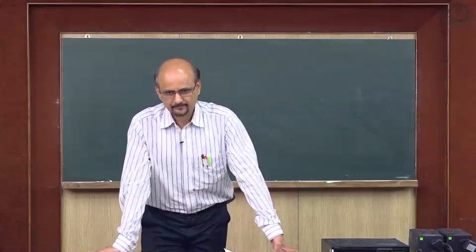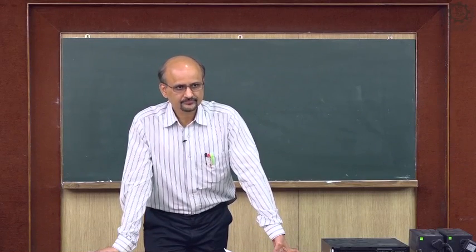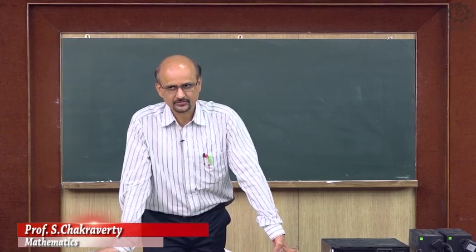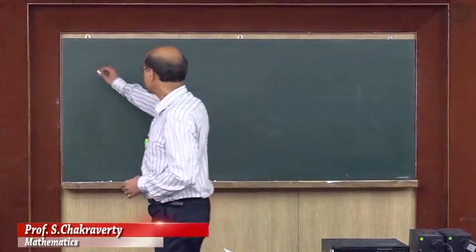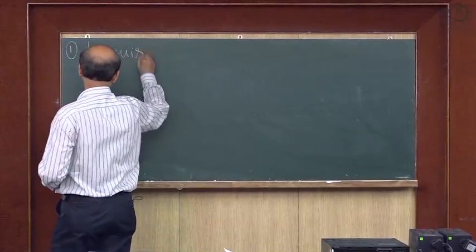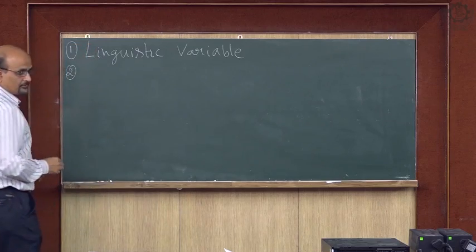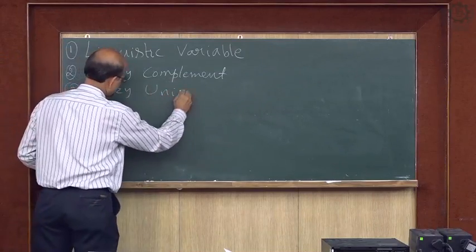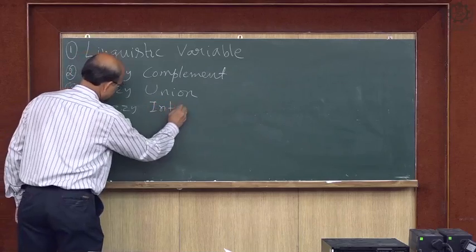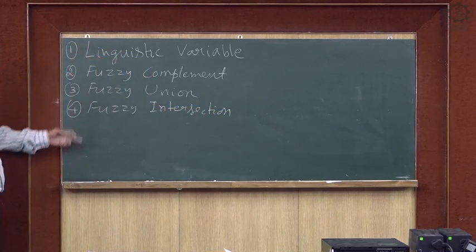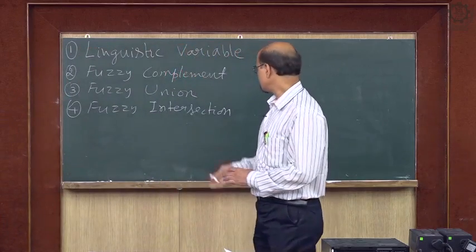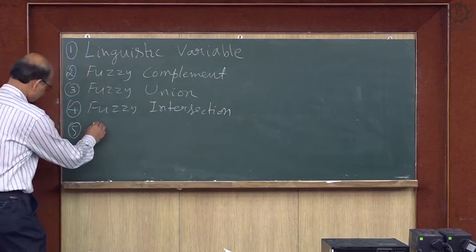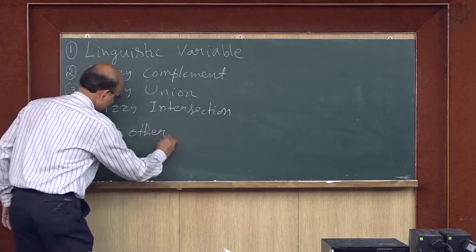In the last class, we did a few operations, namely fuzzy complement, fuzzy union, and fuzzy intersection. In this class, first I will cover linguistic variables, then I will redefine fuzzy complement, fuzzy union, and fuzzy intersection in terms of functions. Lastly, we will do disjunctive addition and some other operations.